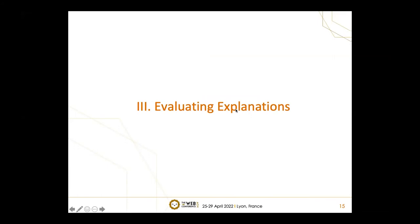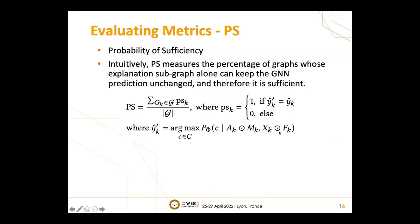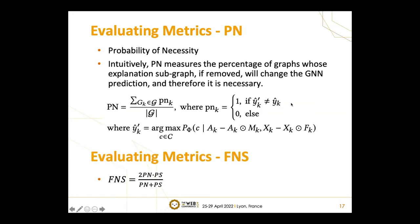In the last part, based on the same ideas of factual and counterfactual conditions, we design a metric to quantitatively evaluate the generated explanations. The designed metric doesn't require any ground truth data. The metric contains two values: the first is the PS value, the probability of sufficiency — PS measures the percentage of graphs whose explanation subgraph is sufficient for the same prediction. The second is the PN value, the probability of necessity — PN measures the percentage of graphs whose explanation subgraph, if removed, will change the original GNN prediction and therefore are necessary. We take the harmonic mean of PN and PS to measure the overall performance, calling it the FN-S value.